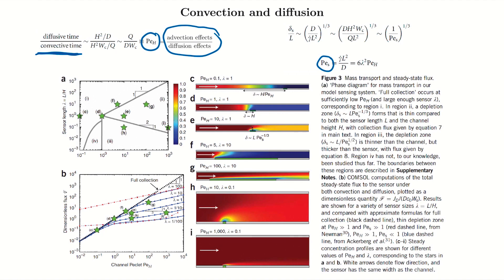This figure is essentially a phase diagram. On the y-axis is the sensor length lambda, and on the x-axis is the channel Peclet number Pe_h. For a given system you can calculate these two numbers and see which zone you fall into. For example, at low enough Peclet numbers and large enough lambda, you're in region one — full collection — and you can see what that looks like at steady state from the depletion zone plots.